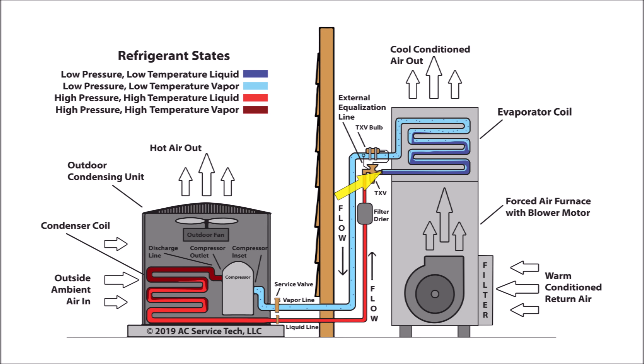Now due to the size of the tubing and the evaporator coil, the refrigerant is going to expand. So you're going to have roughly 80% liquid and 20% flash gas exiting the TXV. It's already going to be in the saturated state, where liquid and vapor both exist at the same time.